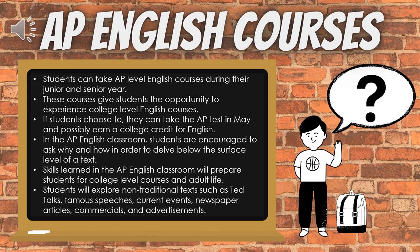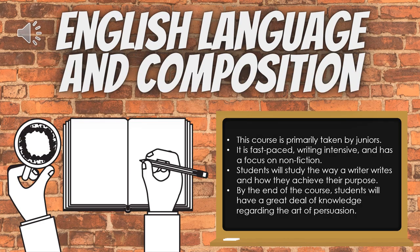Now let's talk about the two types of AP English courses students can take. The first course is English Language and Composition, also known as AP Lang. This is primarily taken by juniors. It is a fast-paced, writing-intensive course with a focus on non-fiction. Unlike other English classes, students study the way a writer writes and how they achieve their purpose. Students will leave this course knowing more about the art of persuasion.